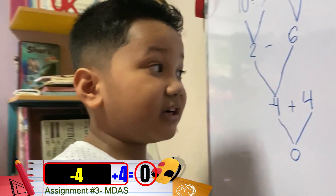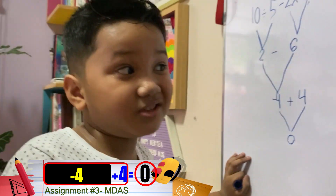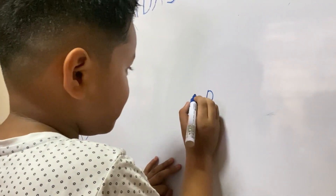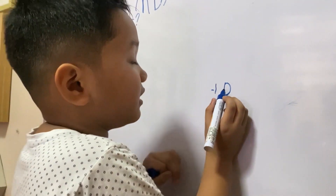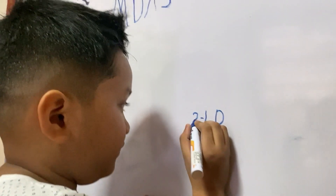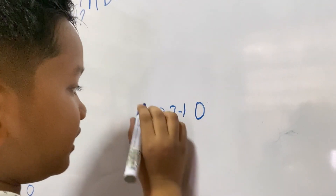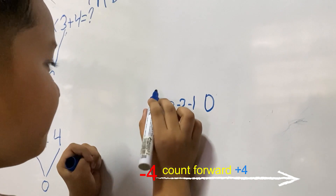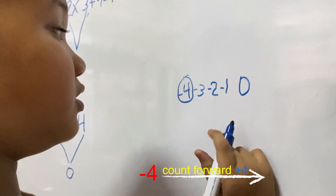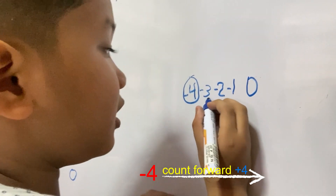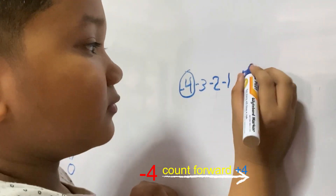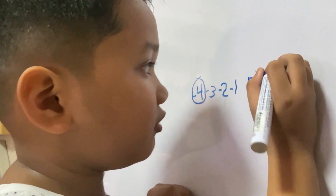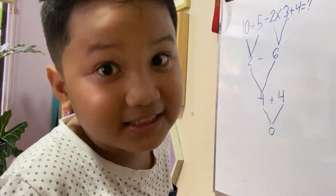Do you know how to add negative and positive integers? On the number line: zero, negative one, negative two, negative three, negative four. Negative four plus four — you need to count four to the right: one, two, three, four. So the answer is zero. Negative four plus four equals zero. Did you get the correct answer? Good job!